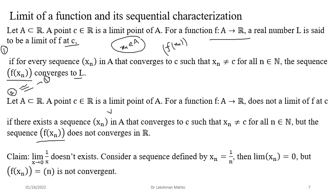Example: take f(x) = 1/x and find the limit at zero. We know the sequence 1/n converges to zero. But f(1/n) = n, and the sequence {n} is a highly increasing sequence that blows up to infinity - it is divergent. Since the corresponding functional sequence is diverging, we conclude that the limit of 1/x at zero does not exist.